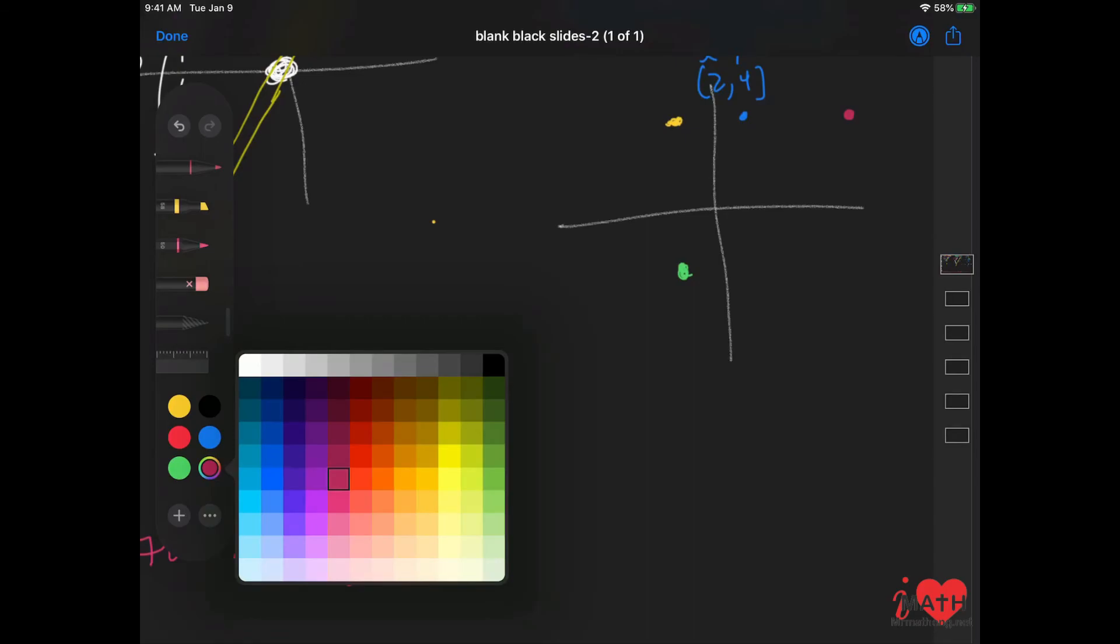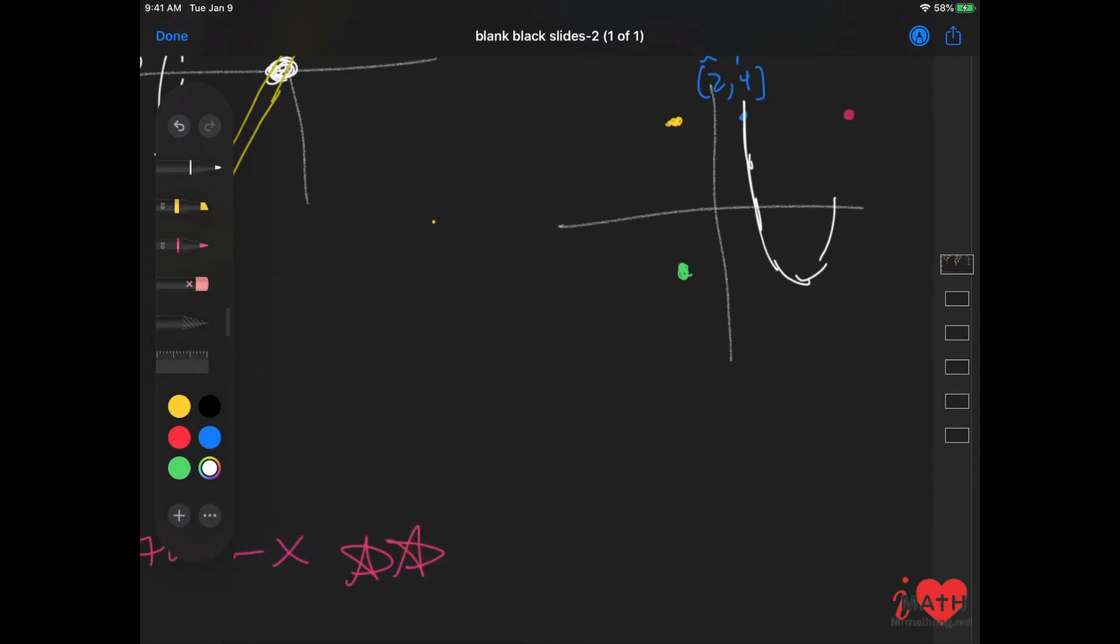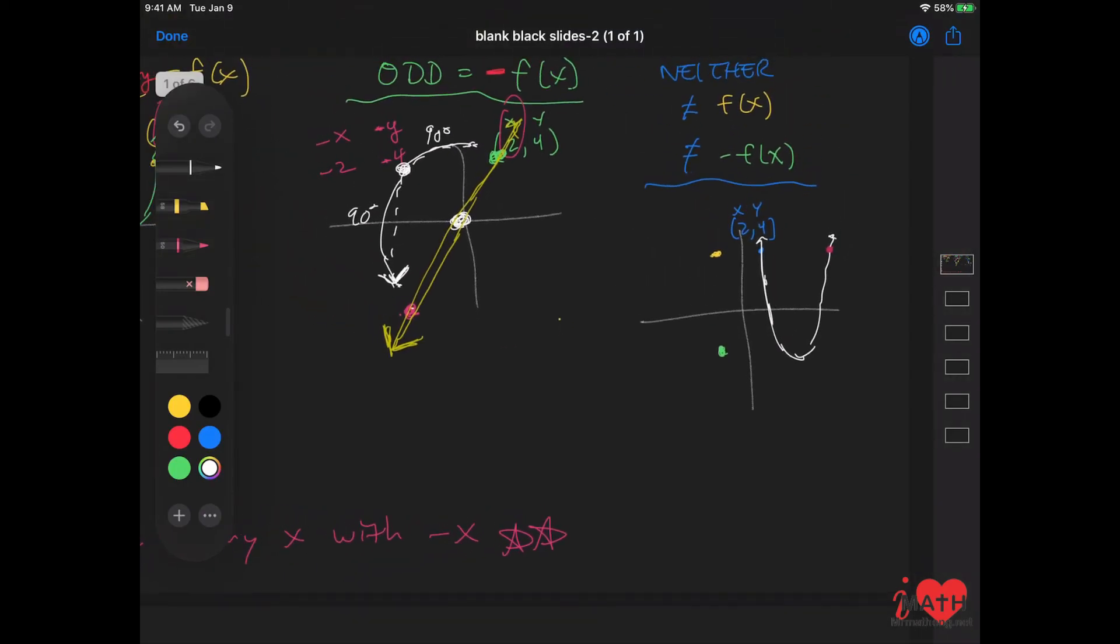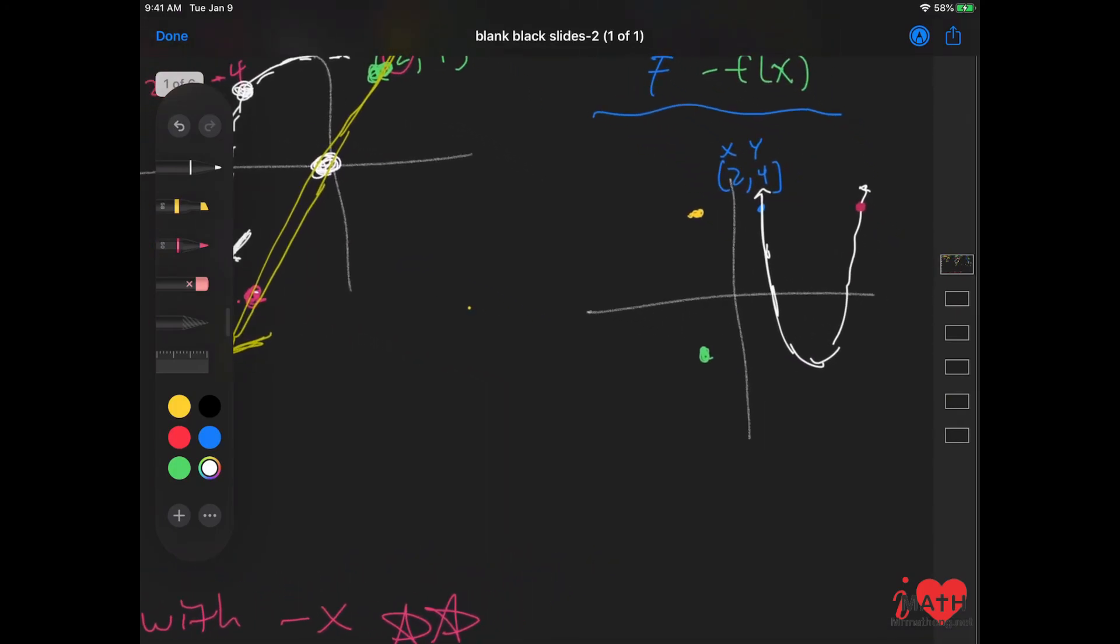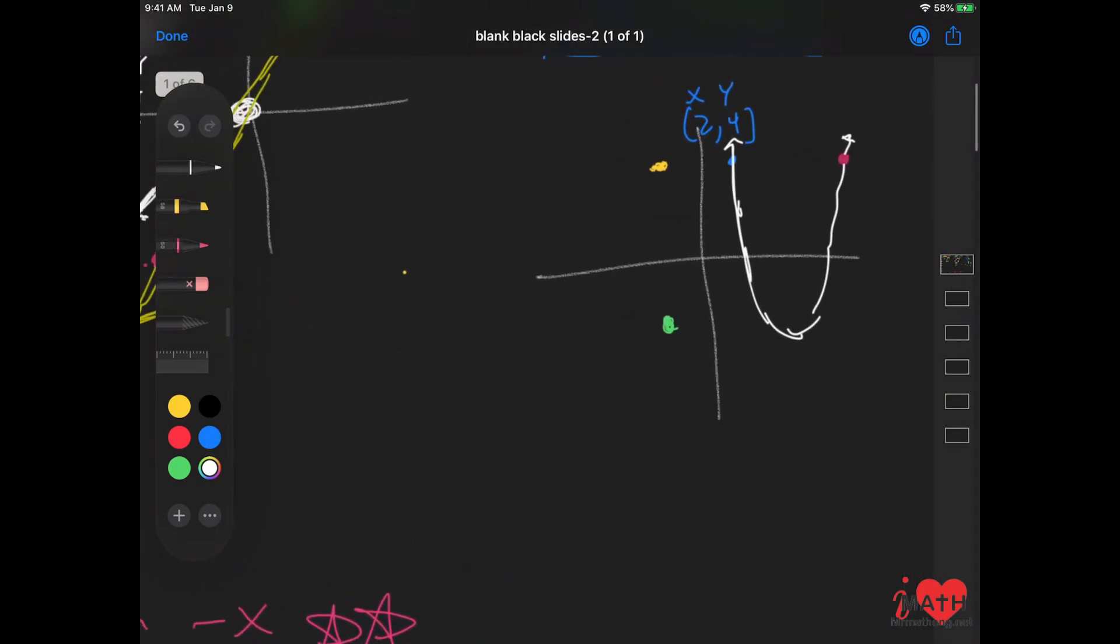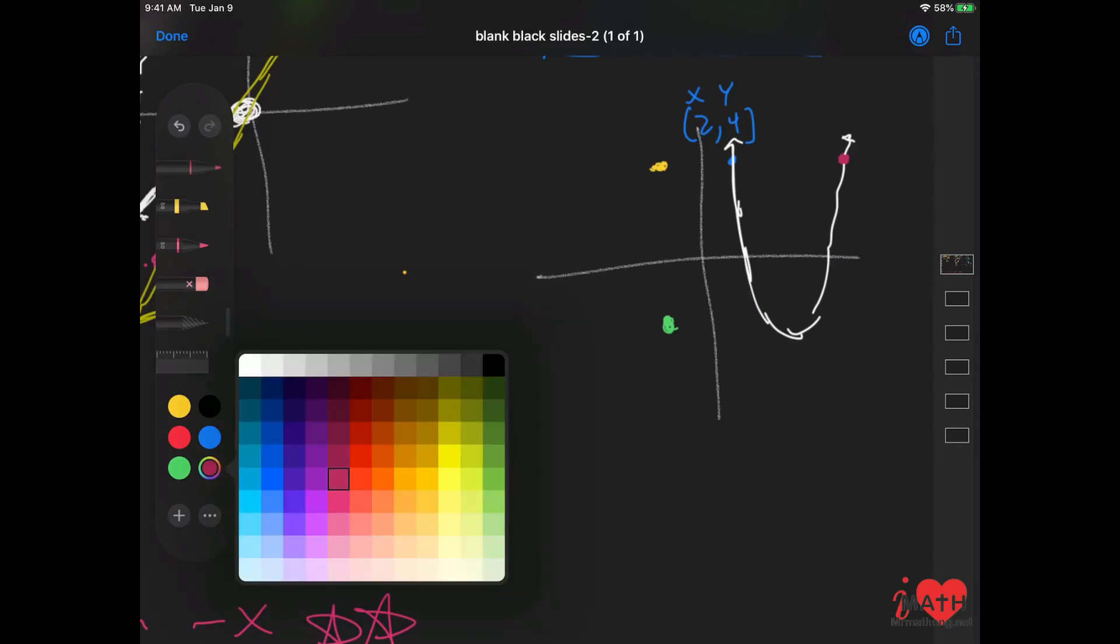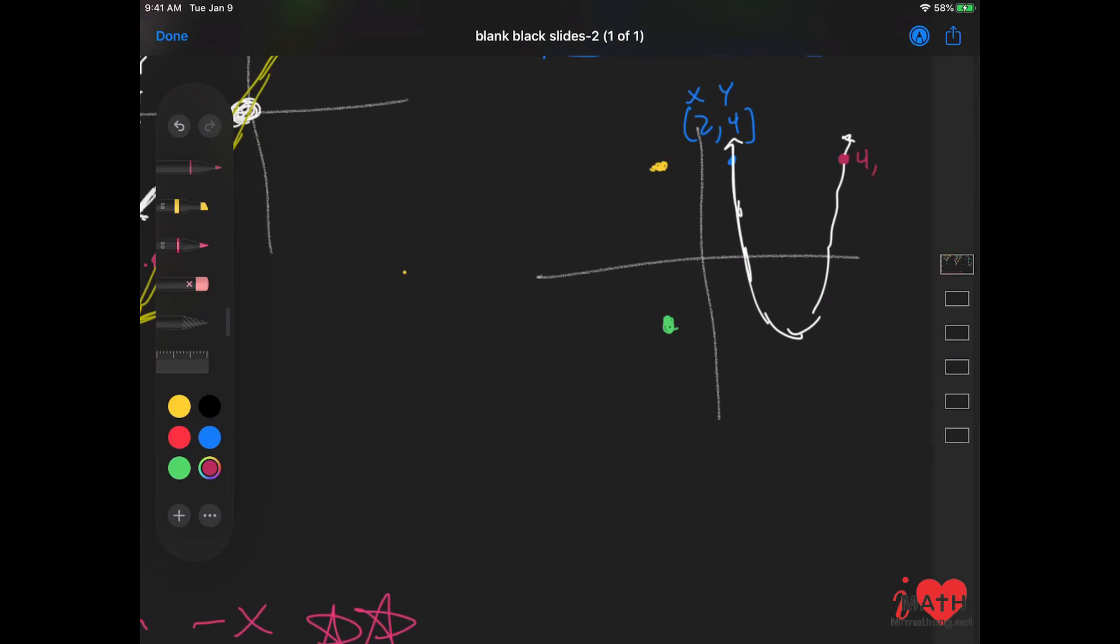Let's just say I'm drawing a graph here. Let's say my new answer is (4, 4). If I take the opposite of x, which would be negative 2, this is not negative 2.